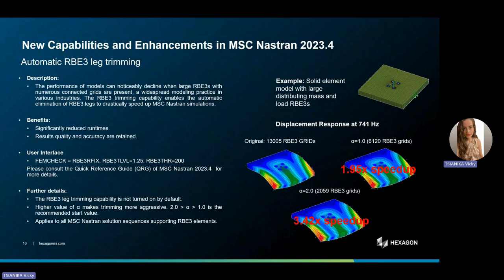Furthermore, in today's complex models in industries like aerospace and automotive, RBE-3 elements with numerous connected grids are commonplace. However, the numerical processing of these RBE elements, particularly during constrained elimination, can be very time-consuming without significantly enhancing the quality of the results. This new capability, called automatic RBE-3 leg trimming, is designed to streamline the simulation process in MSC Nastran by reducing the connected grids of the RBE-3, aiming to significantly expedite simulations across all Nastran solution sequences that support RBE-3 elements. The user will experience significantly reduced run times while maintaining analysis accuracy. The new capability can be activated via FEM check within MSC Nastran.